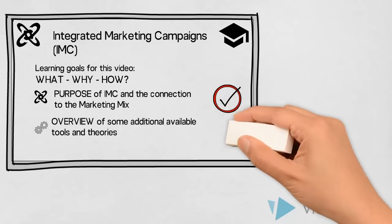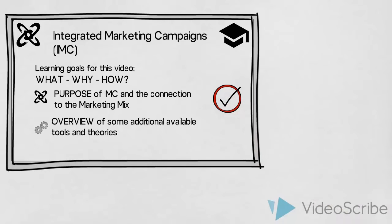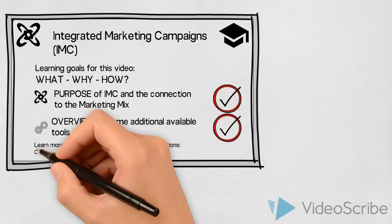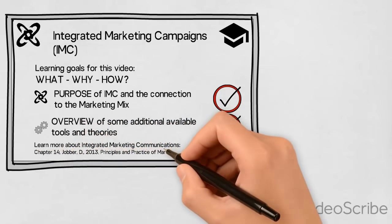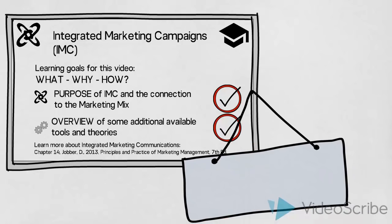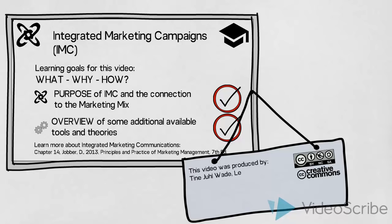We have now established an understanding of the purpose of integrated marketing campaigns, the different factors that make a campaign integrated, and we have presented an overview of some additional tools and theories available to us when designing an integrated marketing campaign. To learn more, I recommend that you read chapter 14 in David Jobber and Fiona Ellis-Chadwick's Principles and Practice of Marketing Management, 7th edition. My name is Tina Waid, thank you for watching.